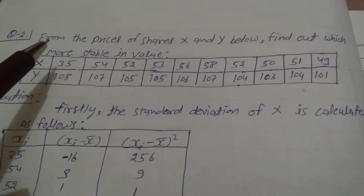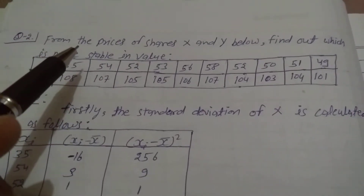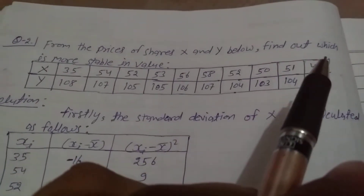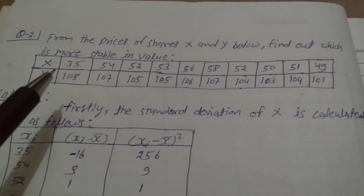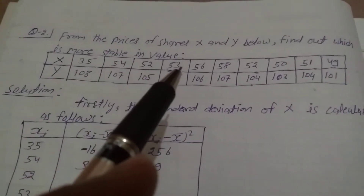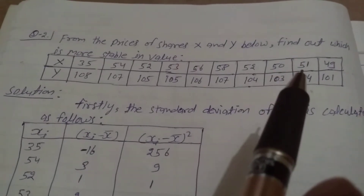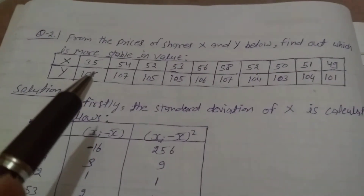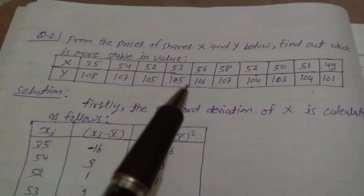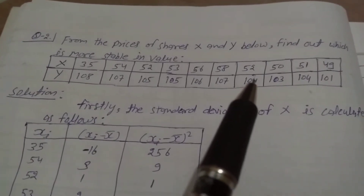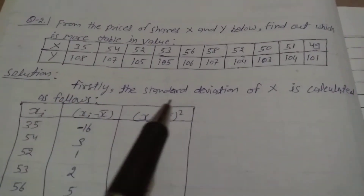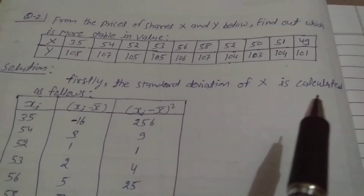Explain question number two, Exercise 15.3, Class 11th, from the price of shares X and Y. Find out which is more stable in value, X or Y. X values: 35, 54, 52, 53, 56, 58, 52, 50, 51, 49. Y values: 108, 107, 105, 105, 106, 107, 104, 103, 104, 101. Solution: firstly, the standard deviation of X is calculated.